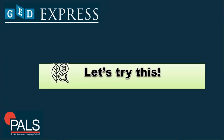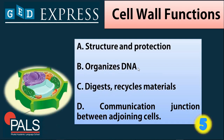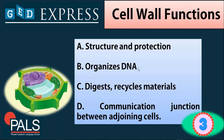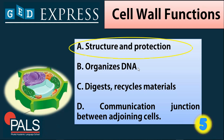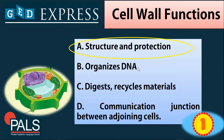Now that you already know the basic parts of an animal and plant cell, let's try to answer the following questions. First question: the cell wall functions as — A. Structure and protection, B. Organizes DNA, C. Digests and recycles materials, or D. Communication junction between adjoining cells. The answer is A — structure and protection of the plant cell. In this photo, you can see the cell wall shown in green.